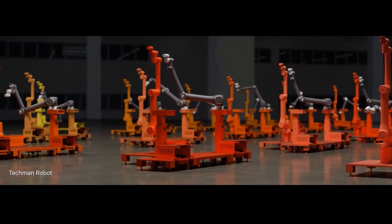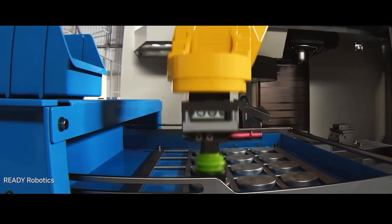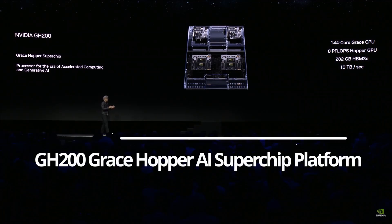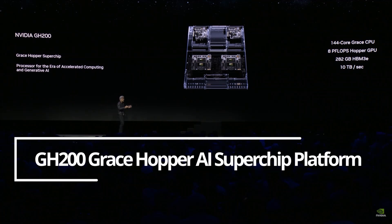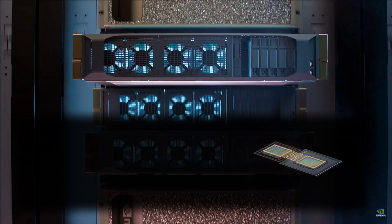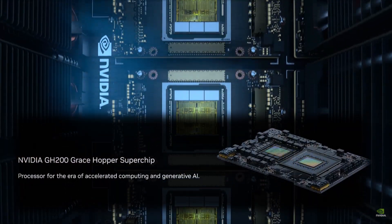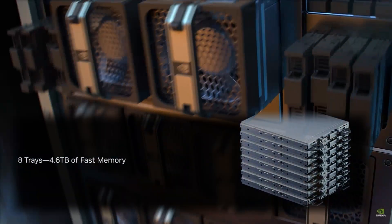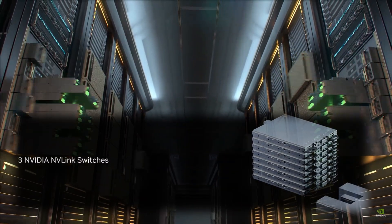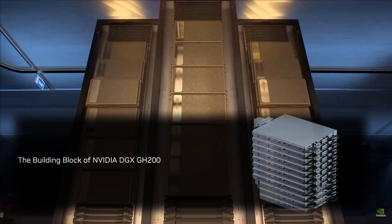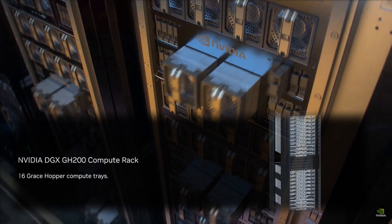NVIDIA also unveiled another massive announcement as it finally pulled the curtains back on its next-gen GH200 Grace Hopper AI superchip platform. Powered by the world's first HBM3e processor, it's been meticulously crafted to shoulder the weight of the globe's most intricate generative AI tasks — think expansive language models, intricate recommender systems, and expansive vector databases — all within reach thanks to the myriad configurations the platform offers.